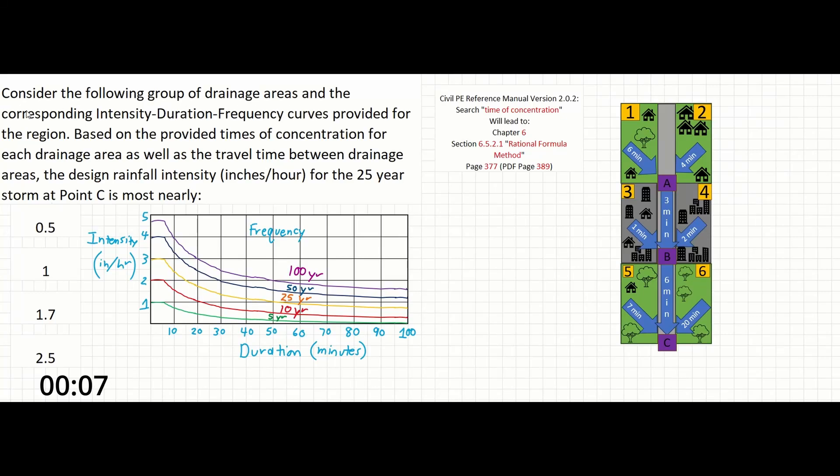Consider the following group of drainage areas and the corresponding intensity-duration-frequency curves provided for the region. Based on the provided times of concentration for each drainage area, as well as the travel time between drainage areas, the design rainfall intensity in inches per hour for the 25-year storm at point C is most nearly what?